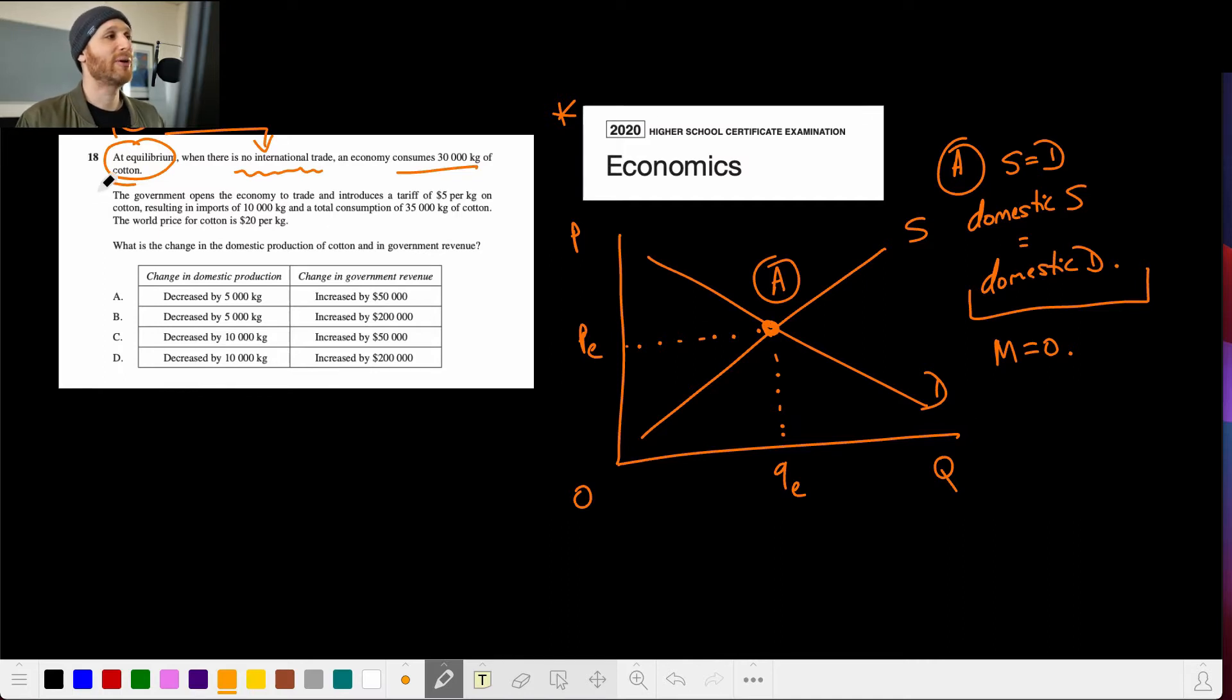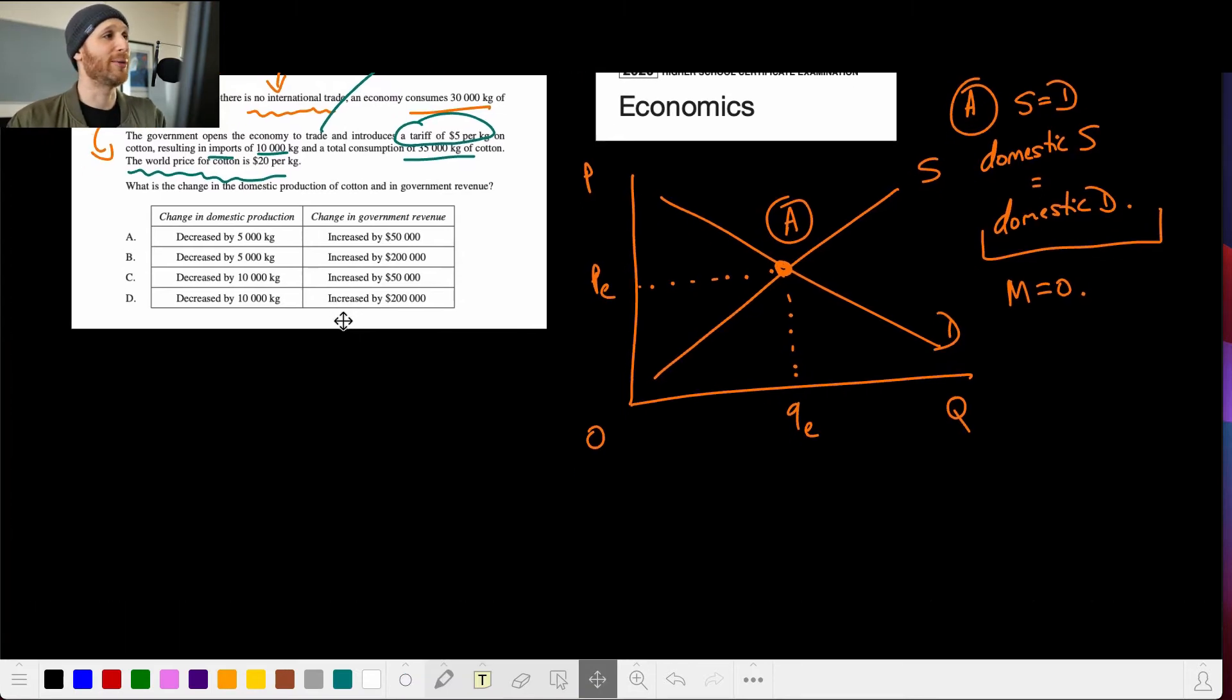So what happens next though, is that the government opens the economy to trade. So what we're going to start to see, let's put this over here, is that we're going to start to see some imports arrive. So the government introduces a tariff of $5 per kilo, resulting in imports of 10,000, and total consumption of 35,000. World price is $20 per kilo. There's a lot going on here.